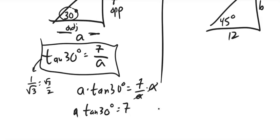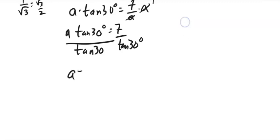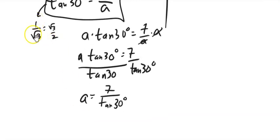And now, how about I divide by tangent of 30 degrees, still working to get a all alone? So a equals 7 divided by tangent of 30 degrees.